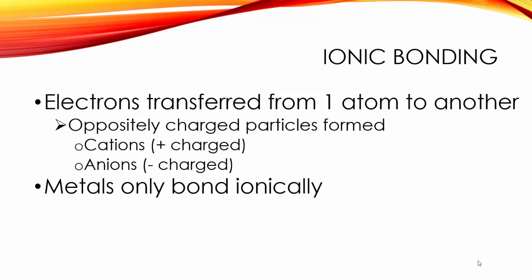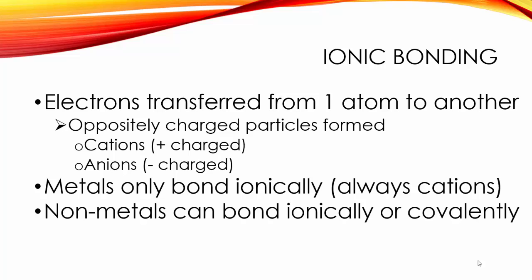Metals can only bond ionically and they always form cations. Non-metals can bond ionically or covalently but when they bond ionically they will always form anions.